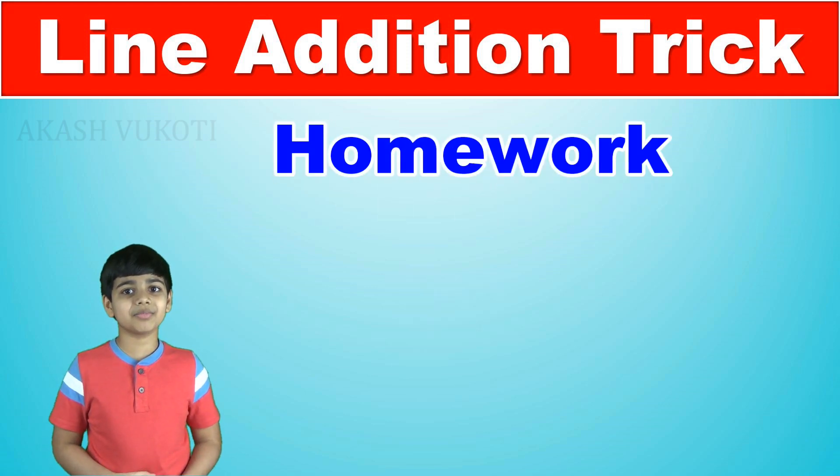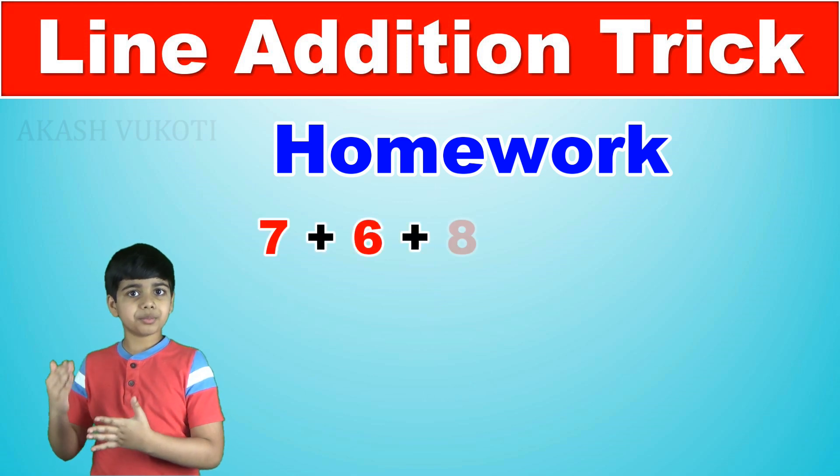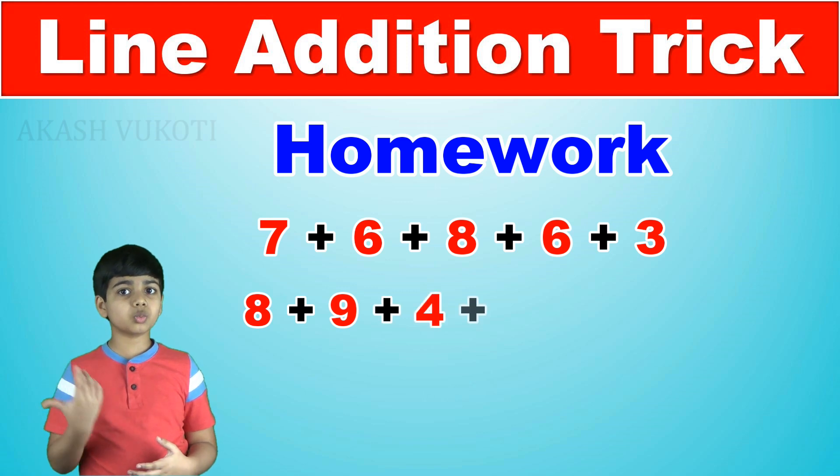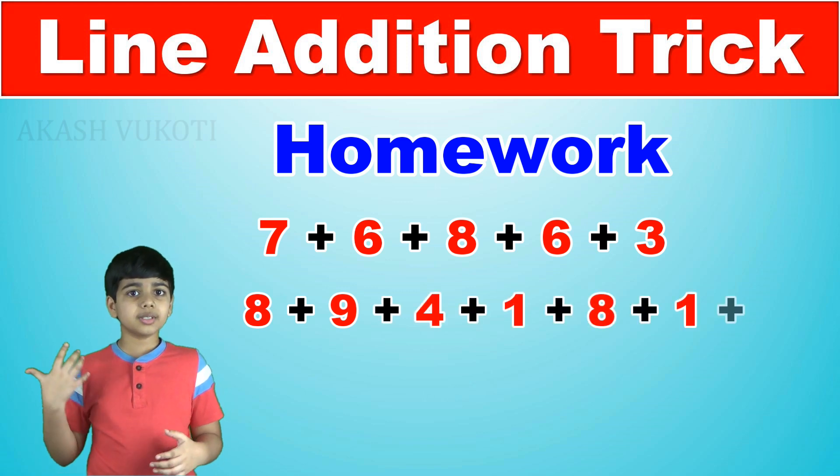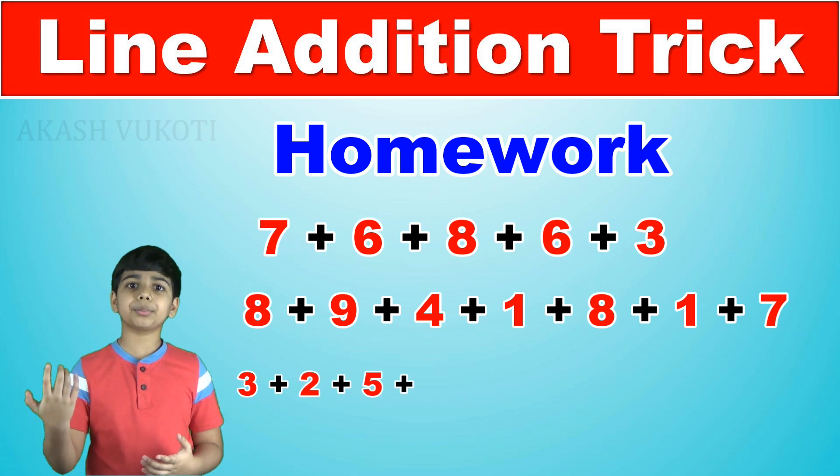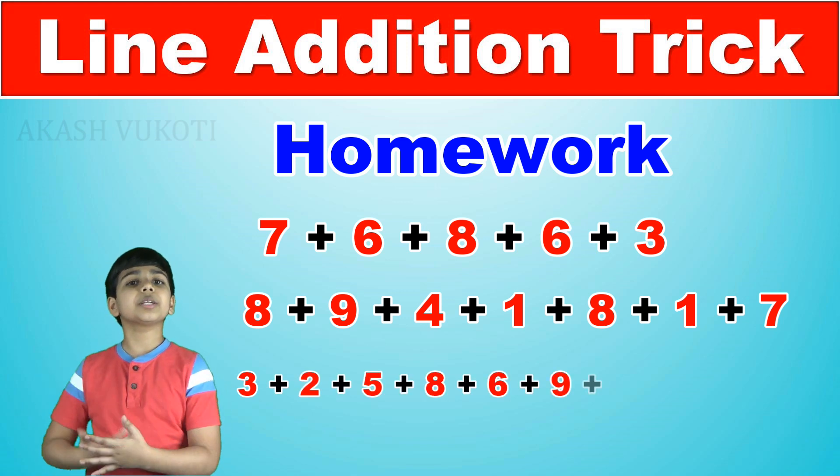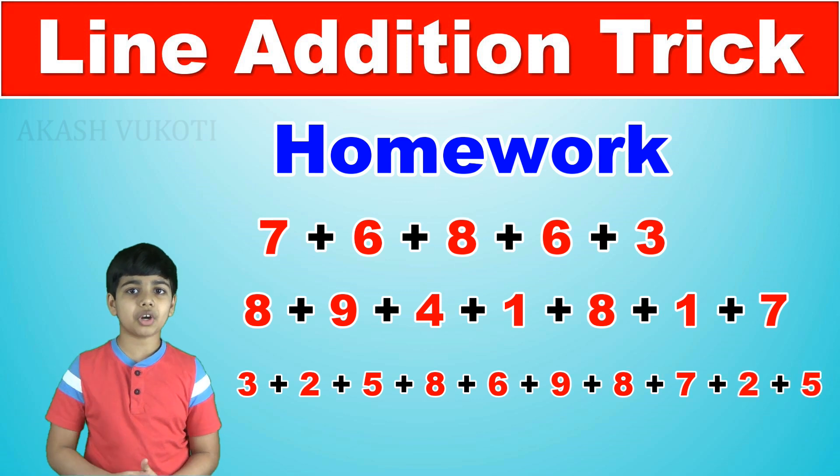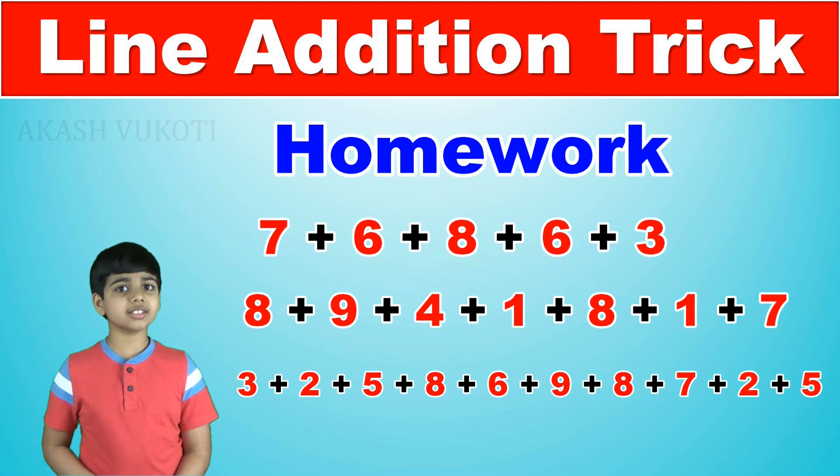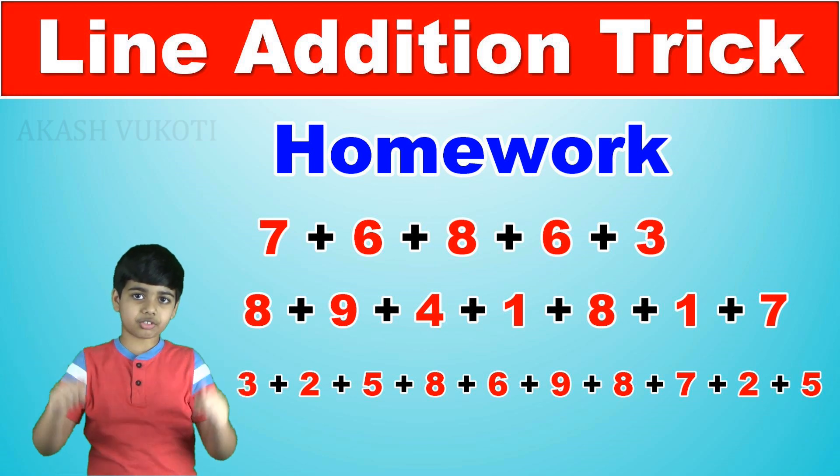Try to figure out what 7 plus 6 plus 8 plus 6 plus 3, 8 plus 9 plus 4 plus 1 plus 8 plus 1 plus 7, and 3 plus 2 plus 5 plus 8 plus 6 plus 9 plus 8 plus 7 plus 2 plus 5 are. I know you can do it. If you want to check if you're right, then the answers are located in the description below.